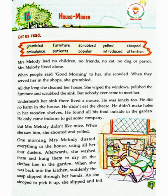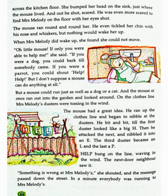As she stooped to pick it up, she slipped and fell across the kitchen floor. Jaise hi vahe usse uthane ke liye niche jhukin, vahe phissal gai aur rasoi ke farsh par gir gai. She bumped her head on the sink, just where the mouse lived. Unka sir sink se ja laga, wahi par jahan chuha rahta tha.